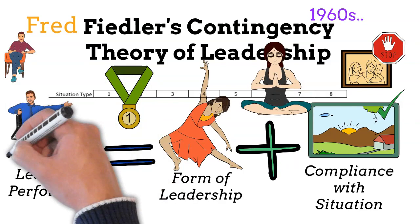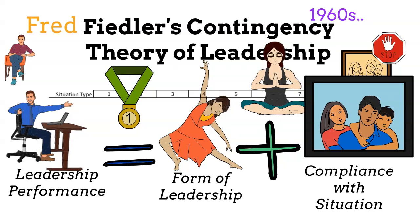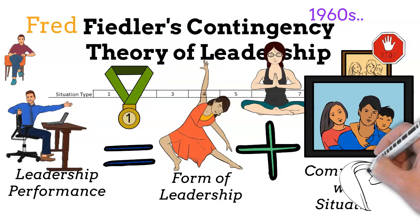This points in the direction of switching out an organization's leader if the wrong type of situation emerges. Fiedler realized this would be highly impractical. Instead, he recommended that the situation be changed to suit the leader's behavior. The Fiedler Contingency Theory provides us with a few levers to push the situation in the needed direction.